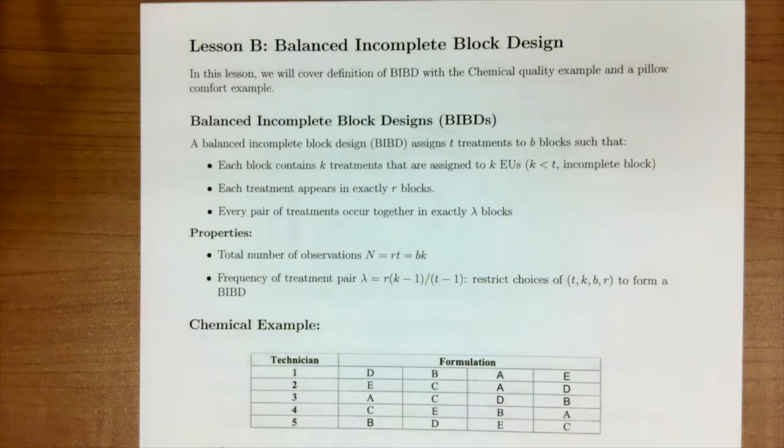A balanced incomplete block design assigns T treatments to B blocks such that each block contains K treatments that are assigned to K experimental units where K is less than T. This is what's making it incomplete. So K is the block size, which is less than the number of treatments.